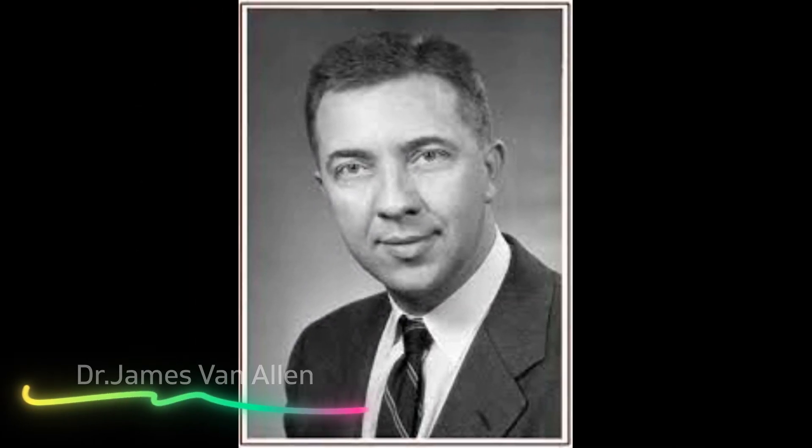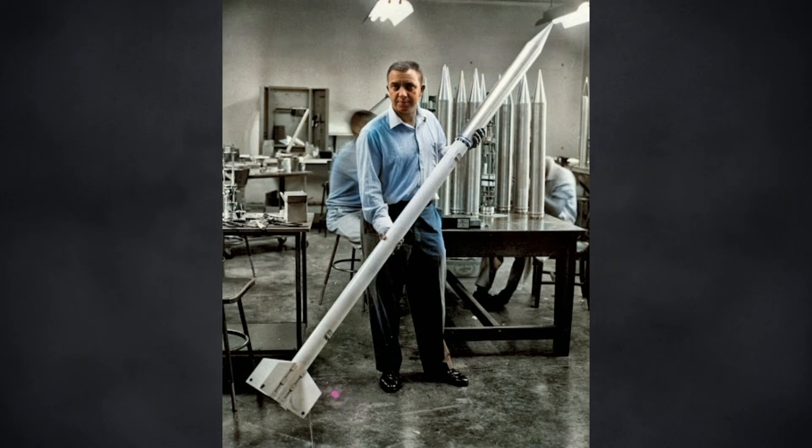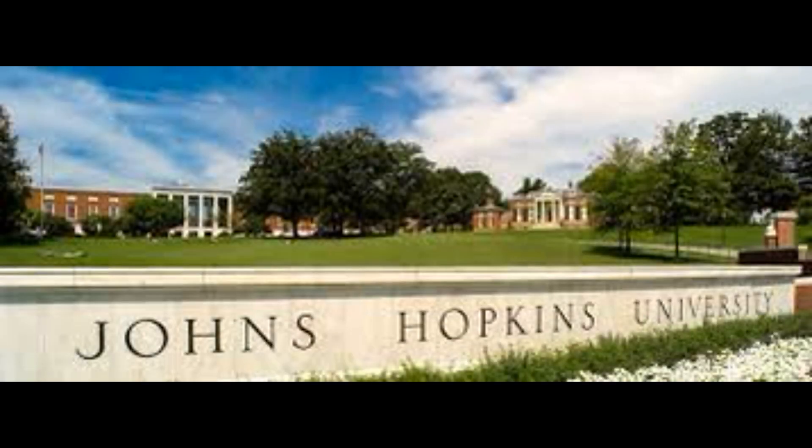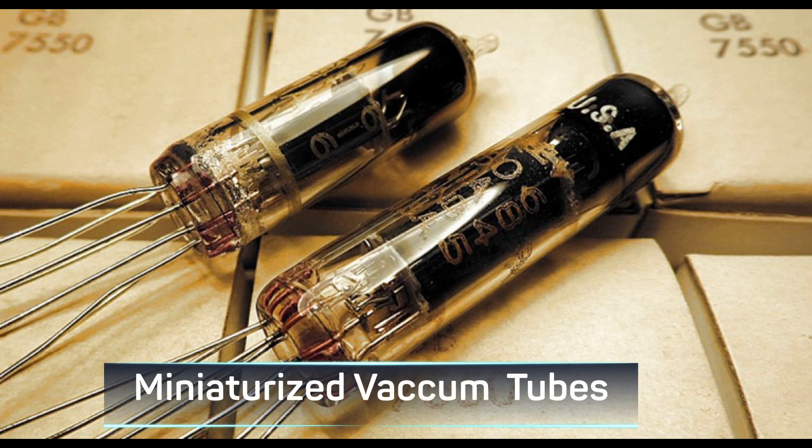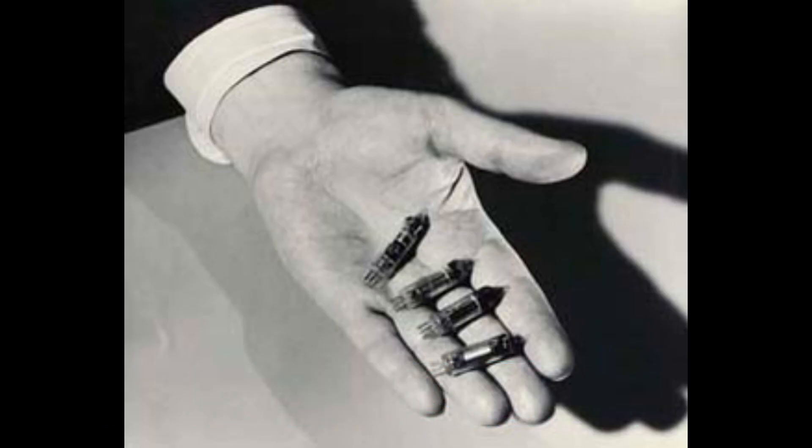Enter Dr. James Van Allen. This is the same scientist after whom the Van Allen radiation belt is named. Dr. Van Allen took up the challenge of making the proximity fuse work after he joined John Hopkins University in 1942. He along with other British scientists succeeded in miniaturizing the vacuum tubes of the proximity fuse, but their main hurdle was to make the fuse survivable.